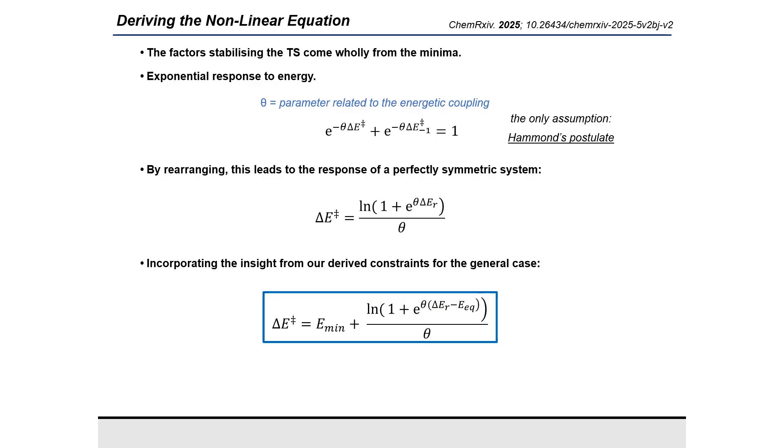The factors coming from the reactant side would be in the first exponential, separated by the activation energy of the forward process. Conversely, the factors coming from the product would be separated by the activation energy of the reverse process. Theta would capture how coupled the transition state is to each of the two minima.